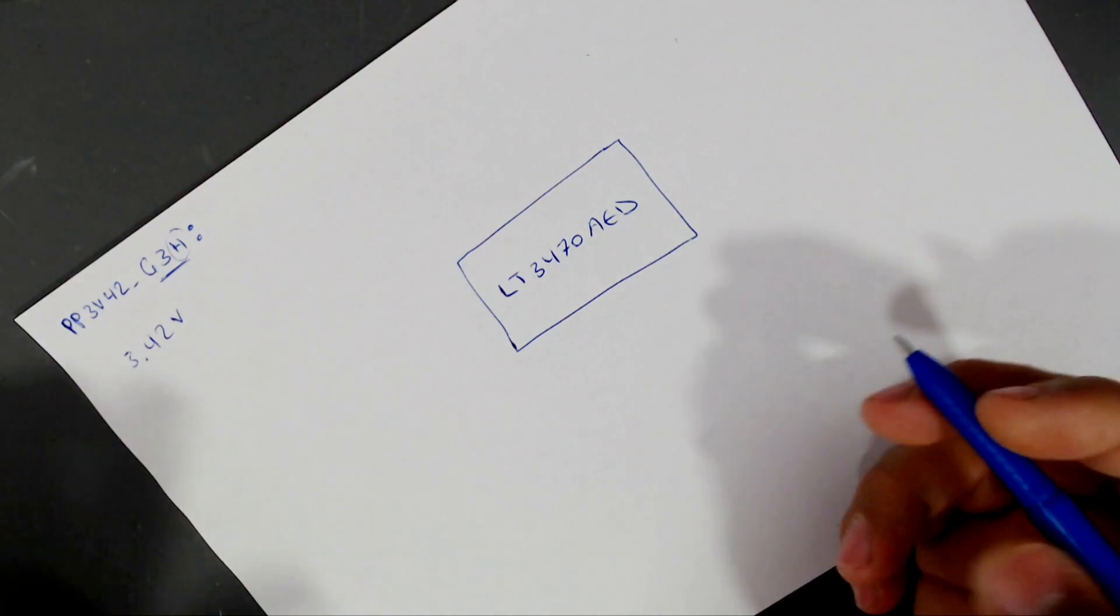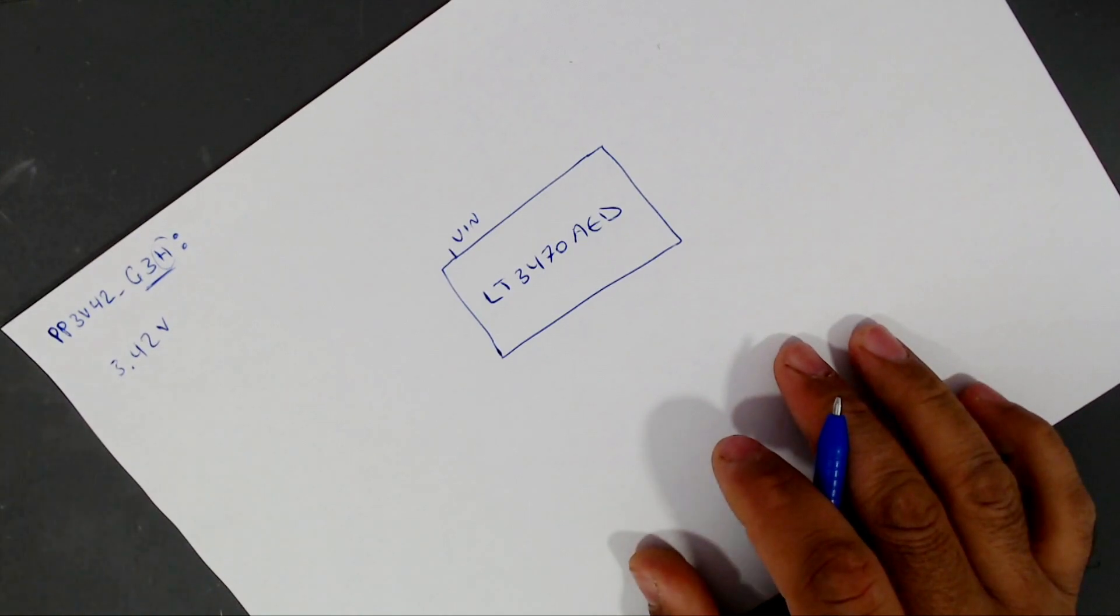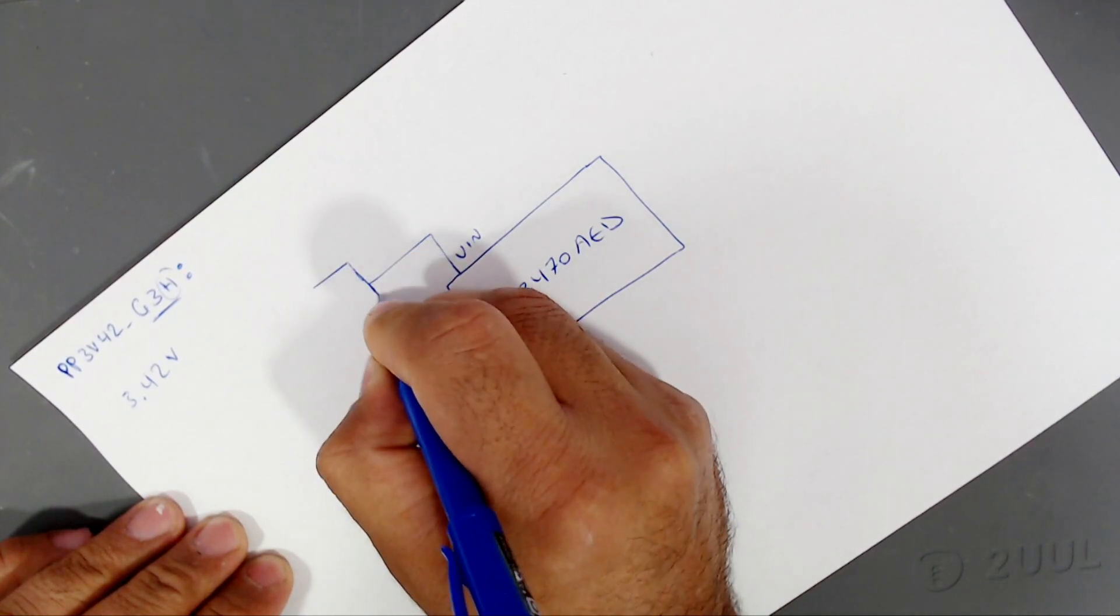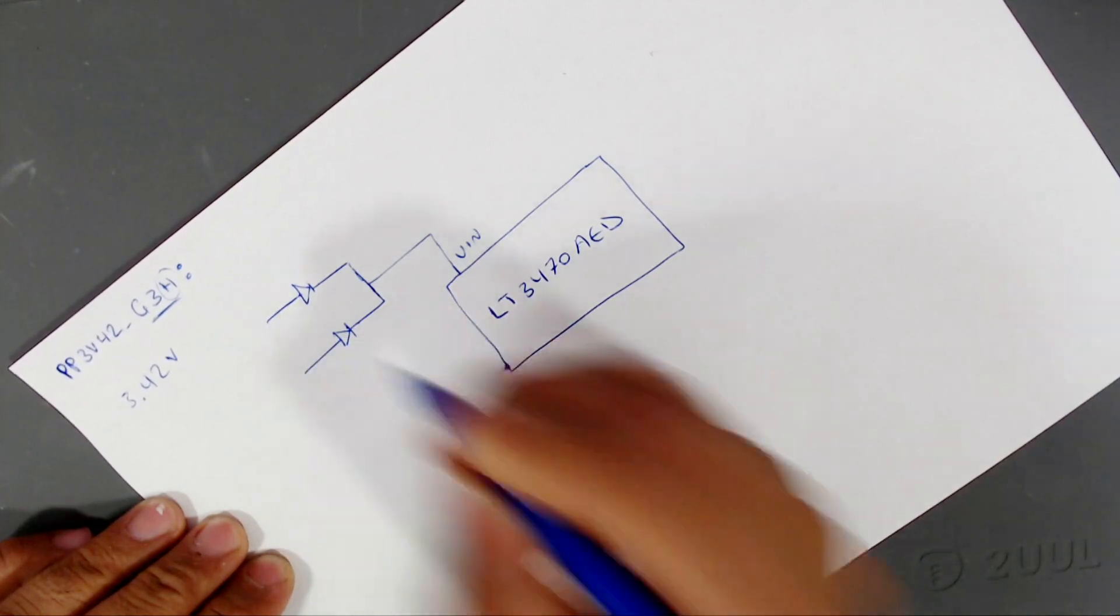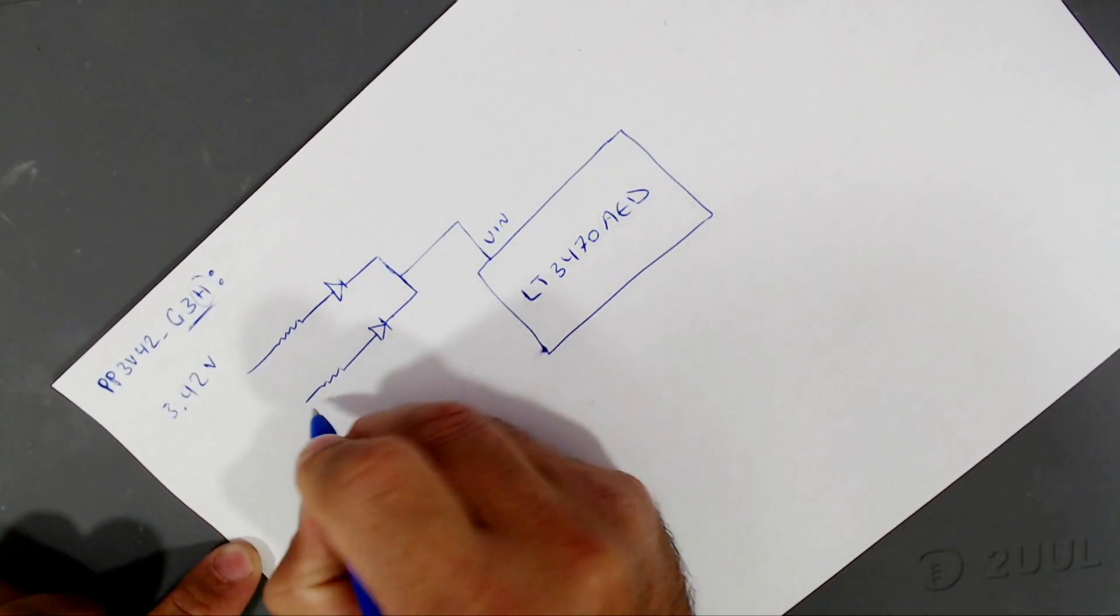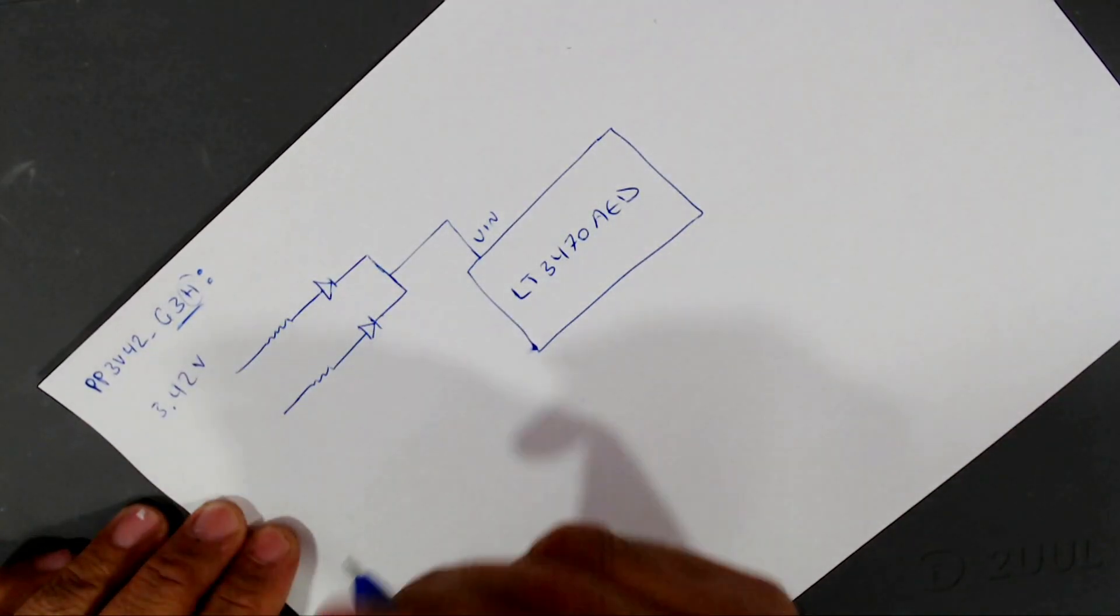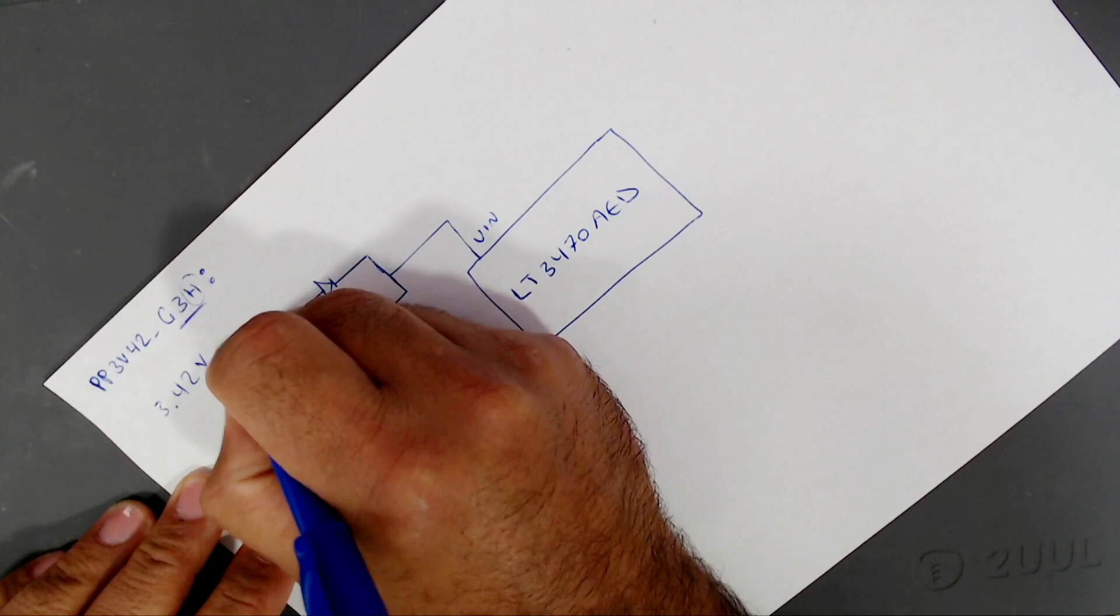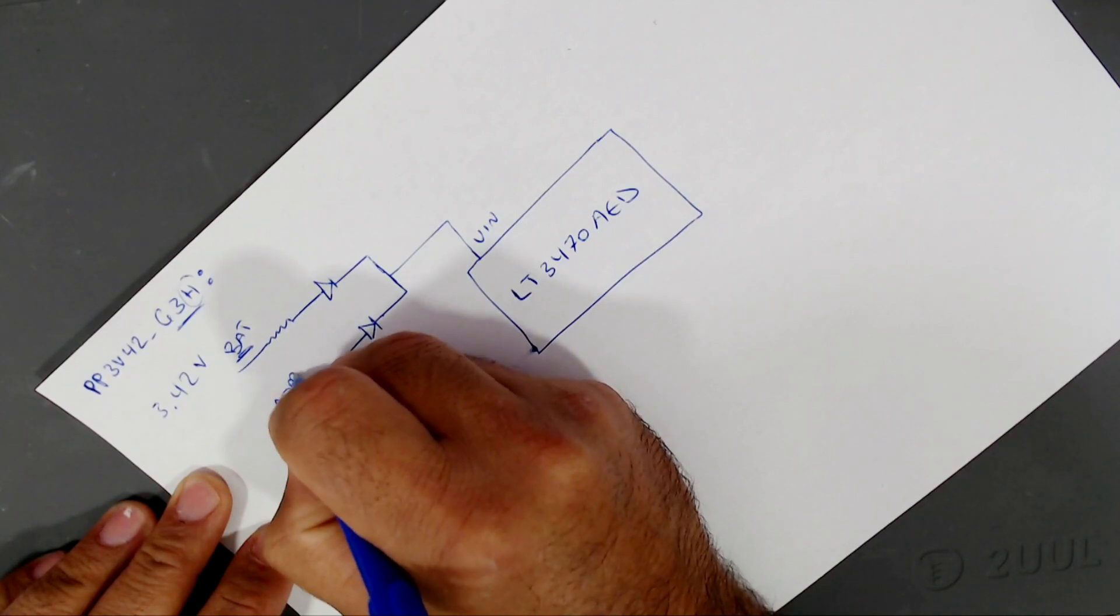This chip has a VIN pin. This VIN pin is connected to a dual diode in one package, and then two resistors. One of them is coming from the battery, so if you have the battery connected, then the battery voltage will appear here. So let's write battery or bat, and here adapter.